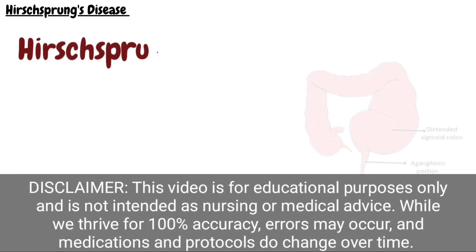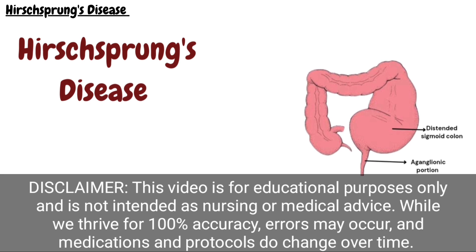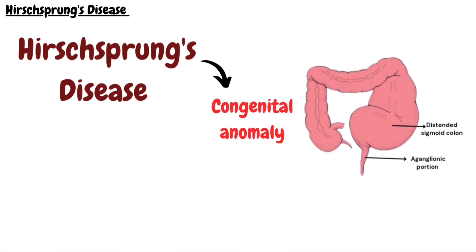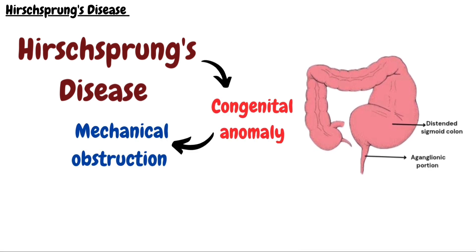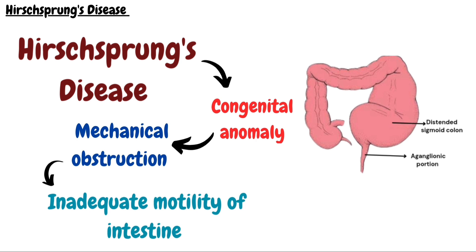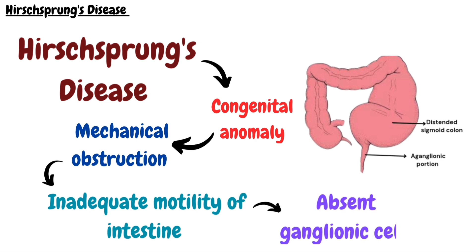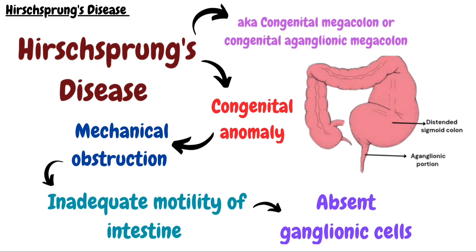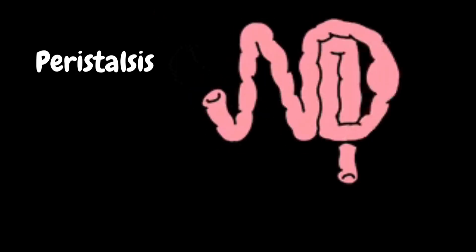In this video we will talk about Hirschsprung's disease. Hirschsprung's disease is a congenital anomaly that results in mechanical obstruction from inadequate motility of part of the intestine, due to absence of neural ganglia or ganglionic cells from the segments of colon. This is why it is also sometimes called intestinal aganglionosis, congenital megacolon, or congenital aganglionic megacolon.